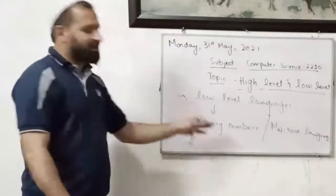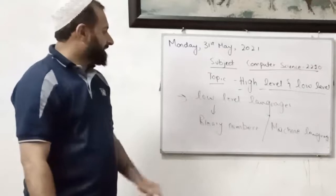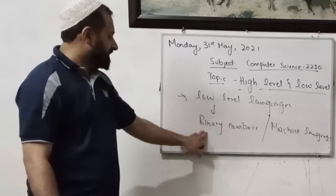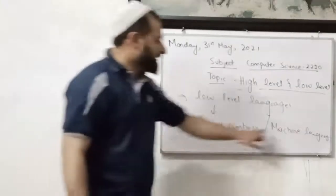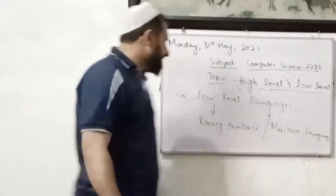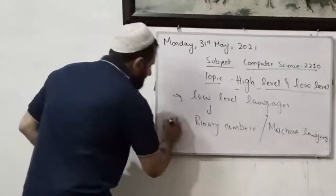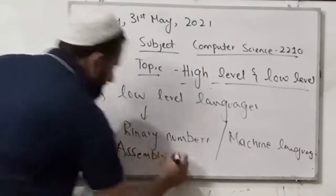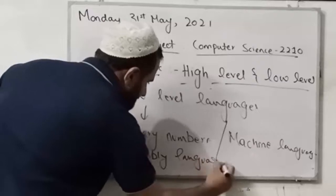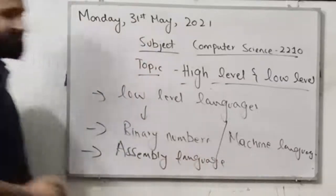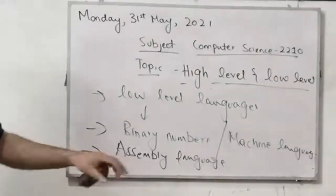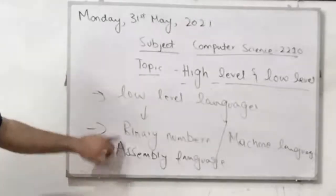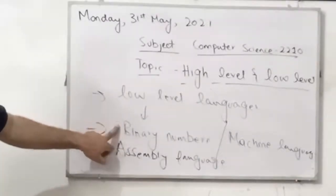Everything is converted directly into binary numbers, and then the computer can act accordingly. The examples of low level language are: first, binary numbers — also called machine language or machine code. The third example is assembly language, which is also a low level language but it is one step higher than binary numbers.